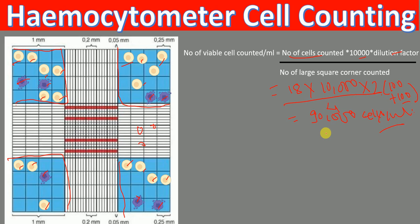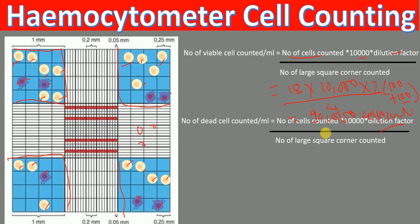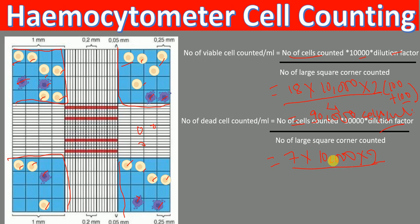To determine the number of dead cells per mL, we apply the same formula. We counted 7 dead cells, multiplied by 10,000, multiplied by the dilution factor of 2, divided by the number of large squares counted, which is 4. When we perform this calculation, the number comes out to be 35,000 dead cells per mL.